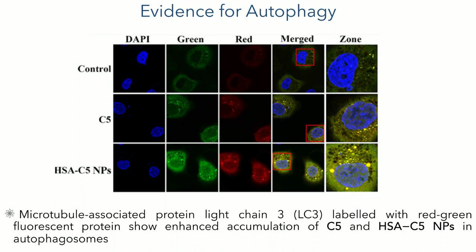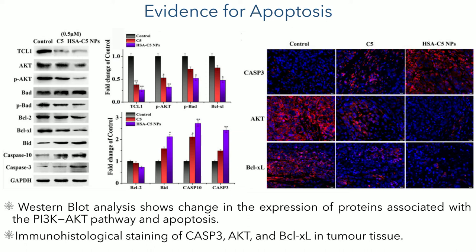To study these vesicles, they labelled the microtubule-associated protein light chain 3 with a red-green fluorescent protein, and this showed an enhanced accumulation of the C5 complex and the HSA nanoparticles within autophagosomes, providing more evidence that this pathway is involved in the mechanism of action. They were also able to demonstrate that apoptosis is another part of the mechanism of action by using western blot analysis to show changes in the expression of proteins associated with the PI3K-AKT pathway. These proteins were then visualised using immunohistological staining, showing changes in the expression of CASP3, AKT, and BCLXL proteins in tumour tissue.